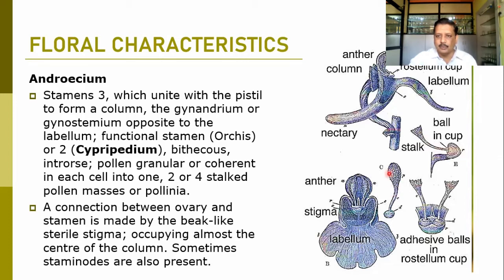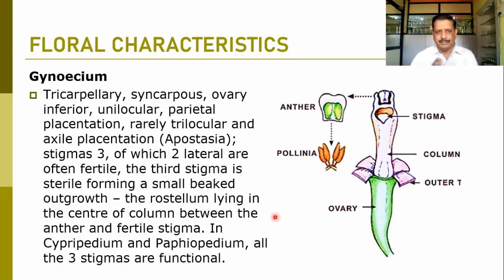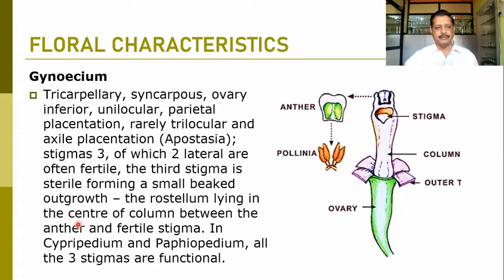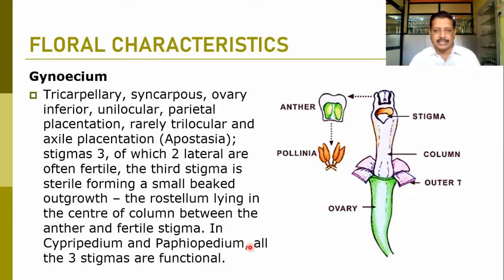It is a tricarpellary syncarpous gynoecium. The ovary is inferior. Unilocular parietal placentation is there. Rarely trilocular, where axile placentation is observed, as in Apostasia. In most genera it is parietal placentation with a single locule. Stigmas are normally three — two fertile and the third sterile — forming a small beaked outgrowth known as the rostellum, lying in the center of the column between the anther and the fertile stigma. In Cypripedium, all three stigmas are functional.